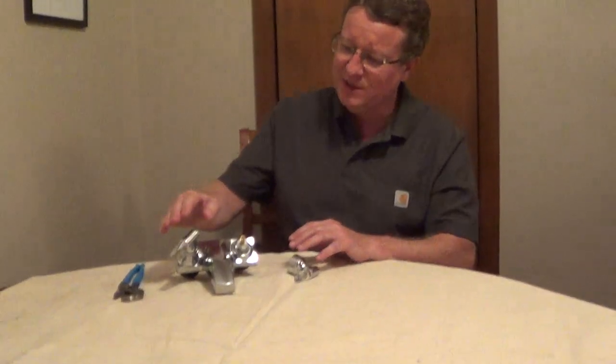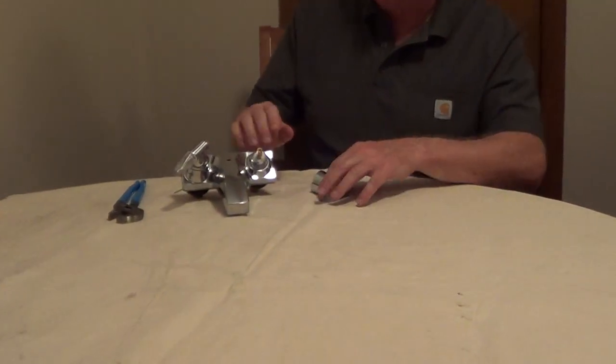If you have a Delta Peerless style faucet and you have a leak, I'll share a couple troubleshooting tips. So first we need to take off the handle to get to the cartridge.